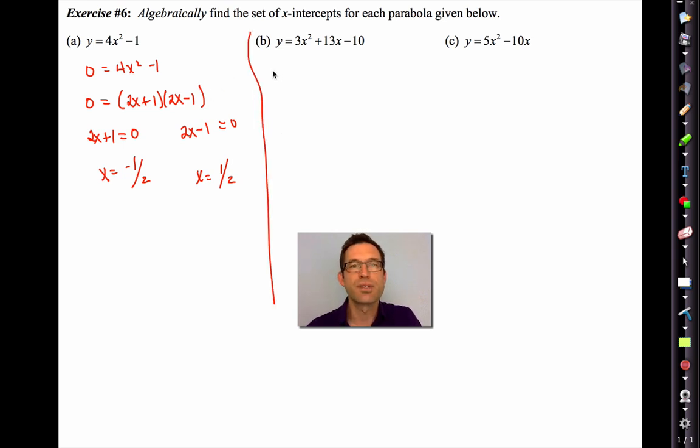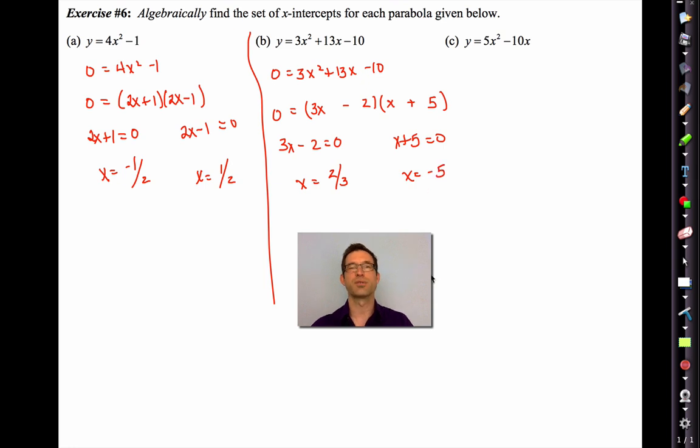Letter b. This is going to be a little bit uglier, I think. Nice little trinomial. We've got to guess and check that. Thankfully, the 3 is prime. Otherwise, this would have been horrible. 3x and x. Now I've got a negative 10. So that's most likely a 5 and a 2. Something like that. In which case, I'll have 3x minus 2 equals zero, and x equals 2 thirds, and x plus 5 equals zero, and x equals negative 5.